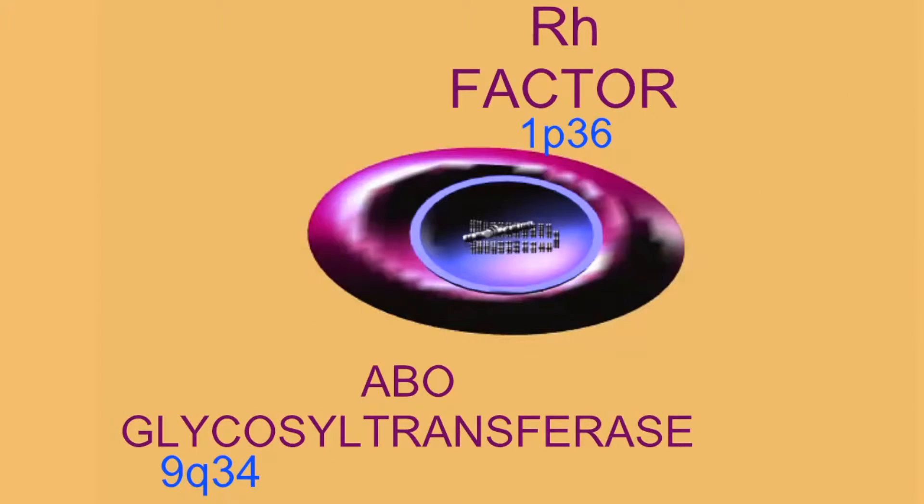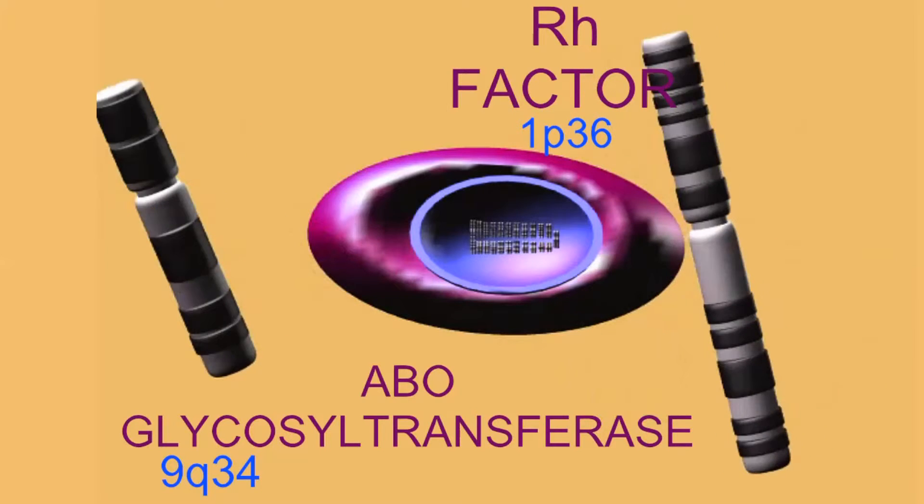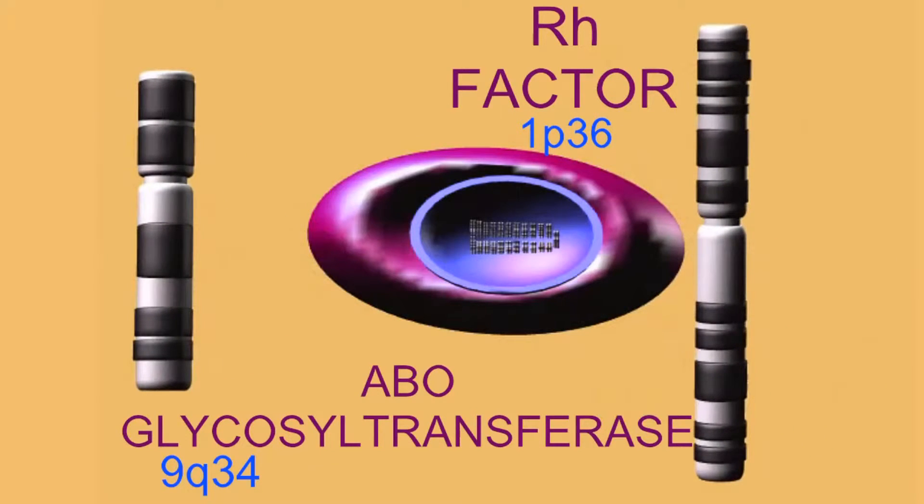The blood types A, B, and O are determined by the gene ABO glycosyl transferase, which is located on chromosome 9q34.